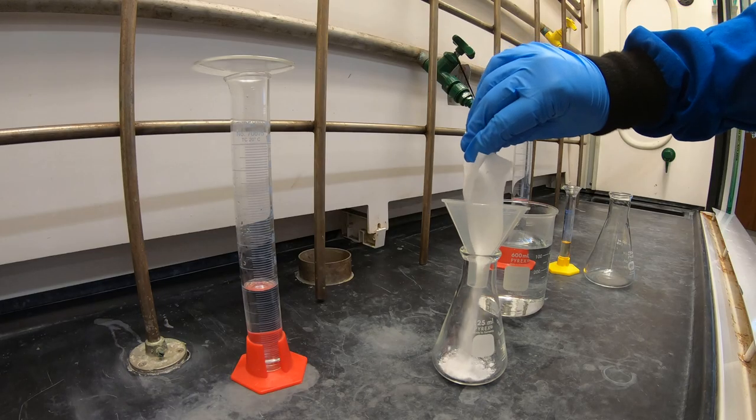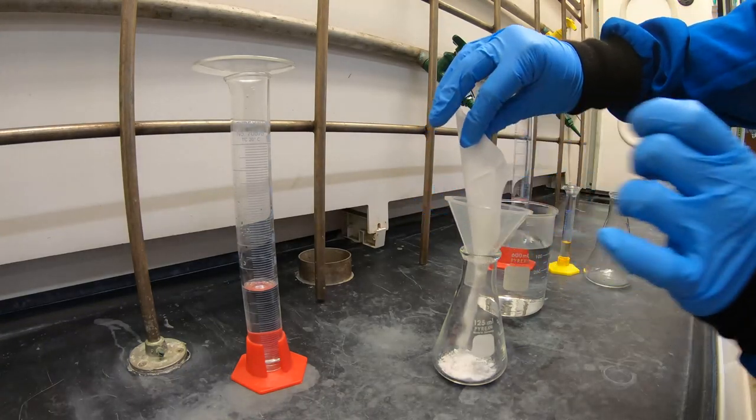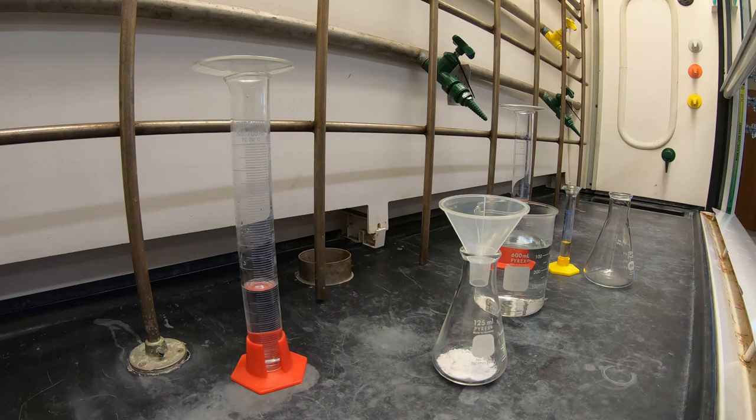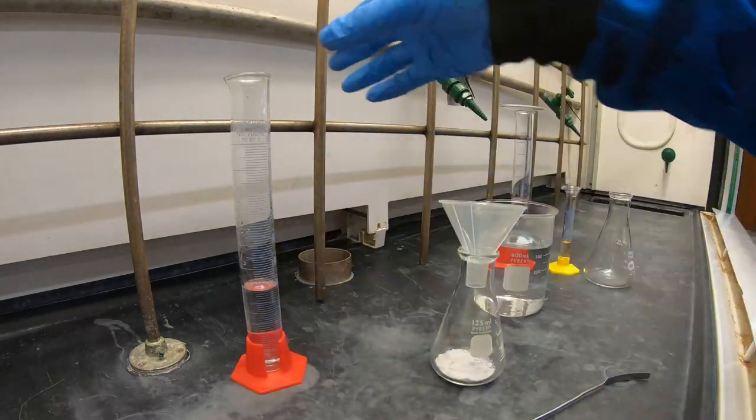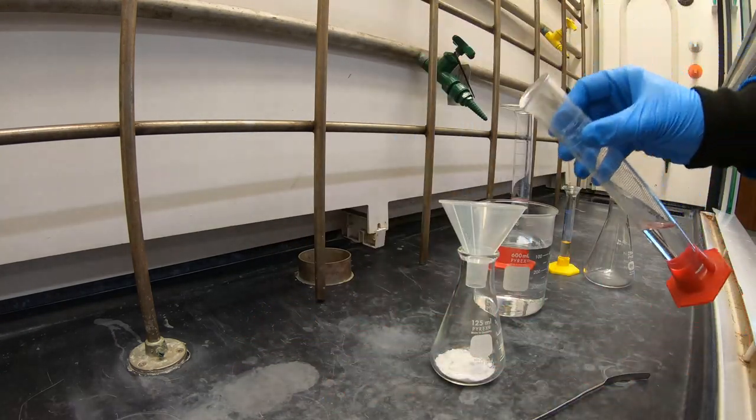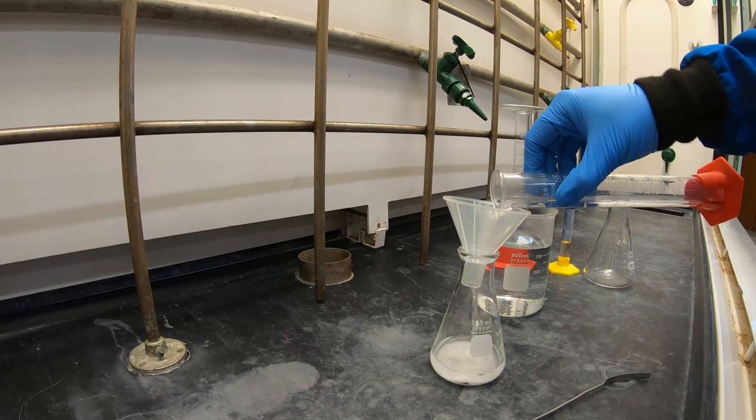Experiment 6: Synthesis of Lidocaine. Begin by adding 0.1 moles of tin chloride to your 125 milliliter Erlenmeyer flask, then dissolve the solid by adding 40 mls of concentrated hydrochloric acid and stirring well.